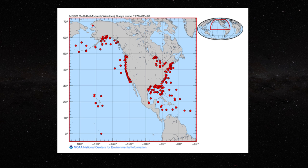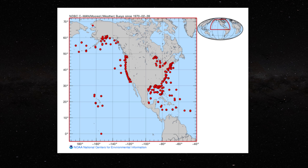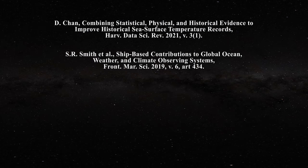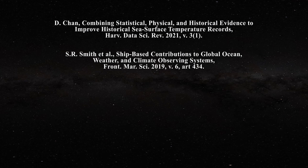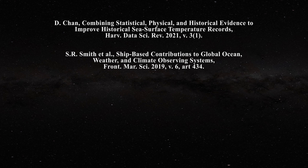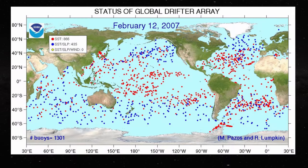Buoys sample sea surface temperatures at a depth of 1.5 to 15 meters depending on their design, and they are often used to calibrate satellite findings. Sea surface temperatures were also sampled from ships, though sampling in that case is limited to principal shipping routes. If remote sensing of the oceans could be executed without problems one would have little use for buoys, but scientists do take advantage of buoy measurements to validate satellite measurements.